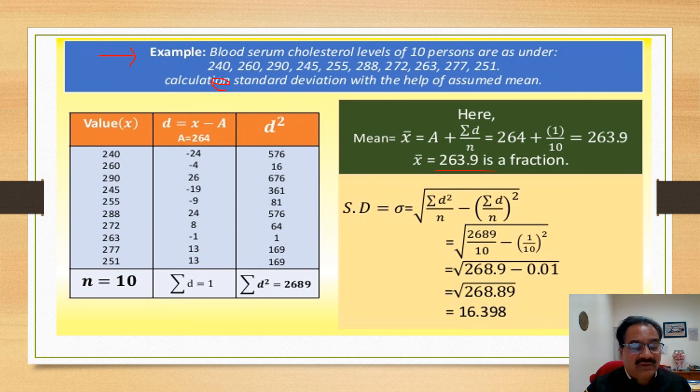Already, this is summation of d. Summation of d is 1. This is minus and plus. So already you may calculate this as 1. And now, d square is this. Summation of d square is 2689. Now, you put the value and you will get 16.398.